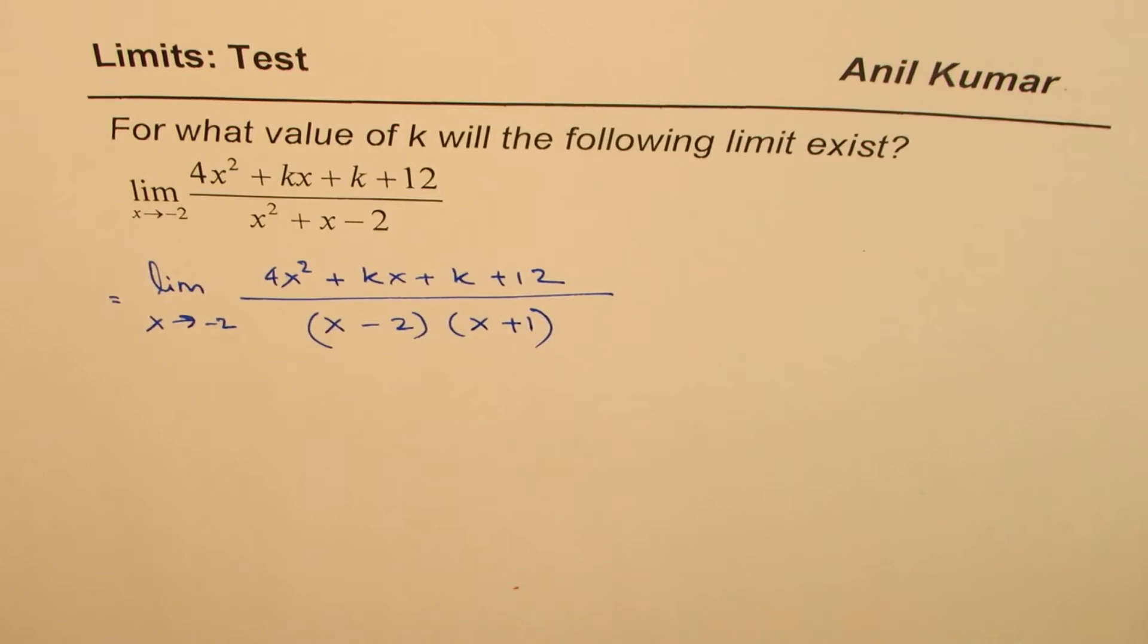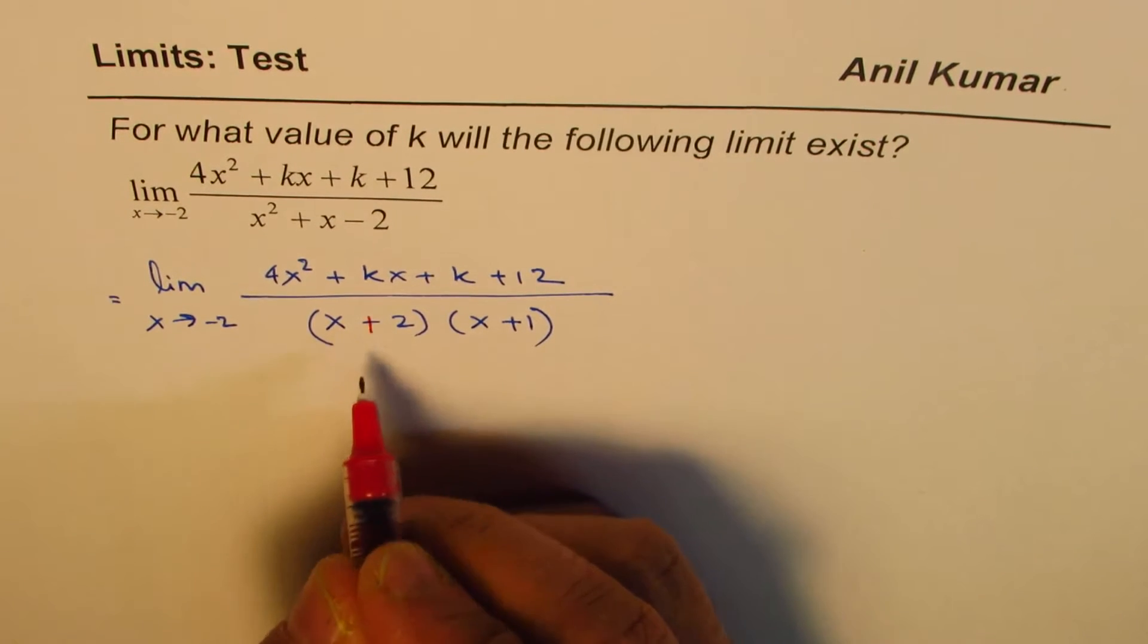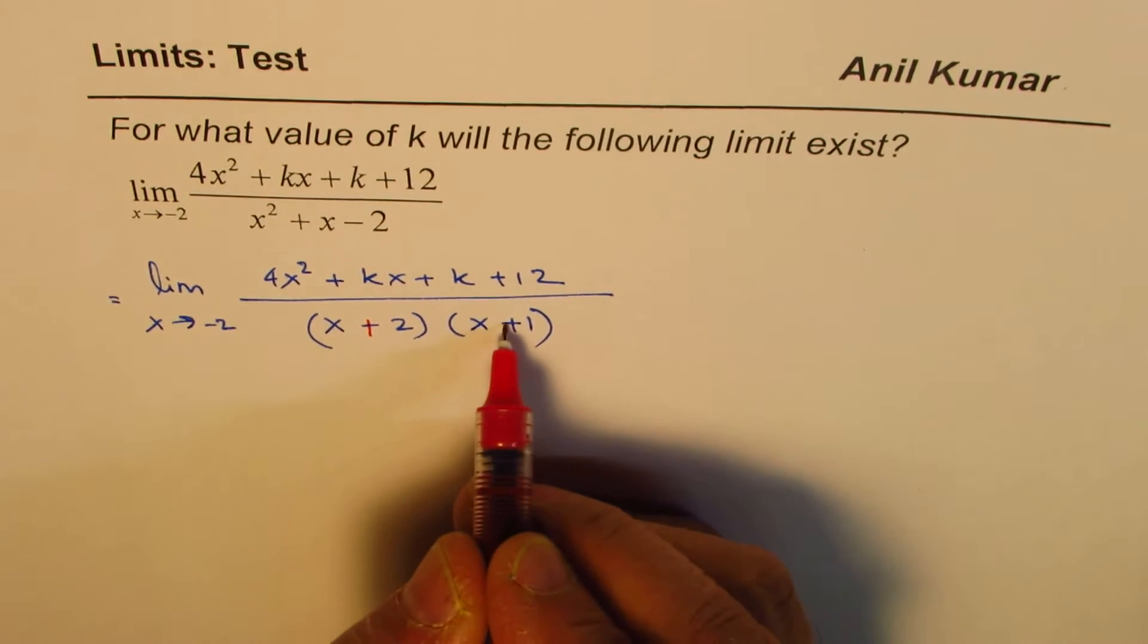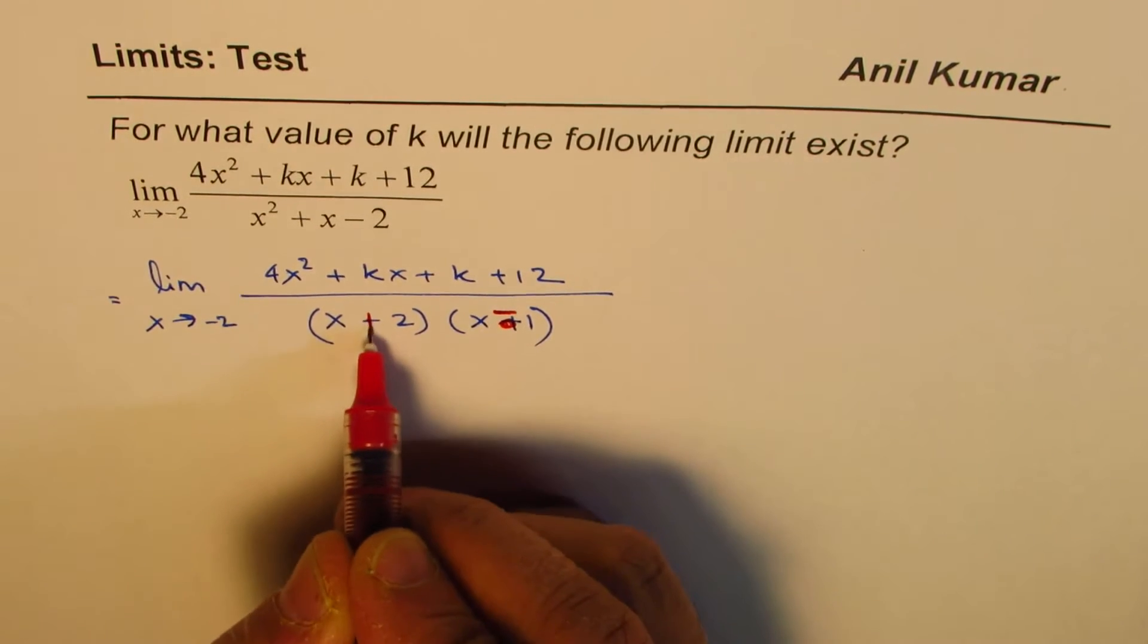Now clearly, if I substitute minus 2 here—I'm sorry, this is plus 2, x plus 2, and this is minus 1. So that's a correction, sorry for that.